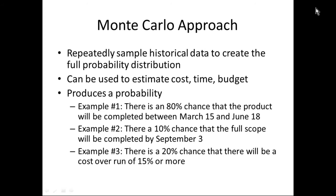You will now know the exact probability that cost, time, and budget will be on schedule, and you'll understand everything about the entire distribution. You'll know the probability that you'll release on any particular date, the probability that the budget will be ahead by 5%, 10%, or 20%, or behind, and what the chances are of releasing between two dates or that the full scope will be completed by a certain date.